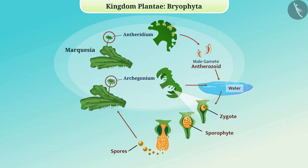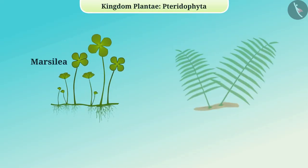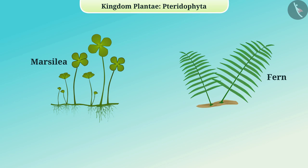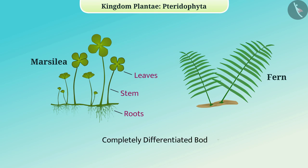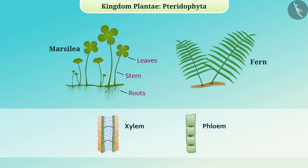Let's understand Pteridophyta. Plants such as Marsilea and fern are included in this class. This class consists of all those plants whose body develops completely into roots, stems, and leaves — meaning their body is completely differentiated. They have specific tissues for the transport of water and other necessary substances from one part of the body to another; we call such tissues conducting tissues.